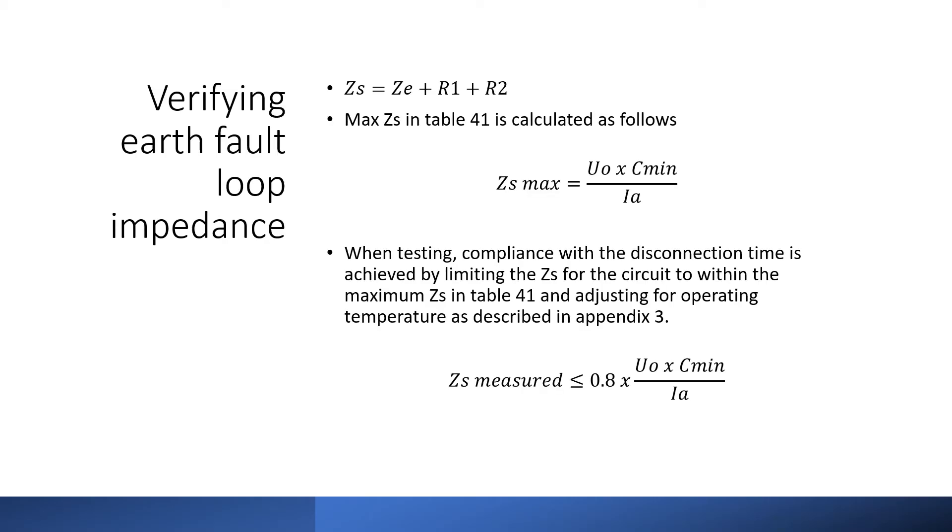Next we need to verify the earth fault loop impedance. As I mentioned earlier one way of determining the earth fault loop impedance or ZS is to add the measured value for R1 plus R2 to the measured value for ZE or we can measure the ZS. To verify the maximum ZS we need to ensure that the measured ZS doesn't exceed the maximum permitted ZS for the protective device to ensure that the disconnection time is met in the event of a fault. The maximum ZS for some protected devices is listed in Table 41 of BS7671.